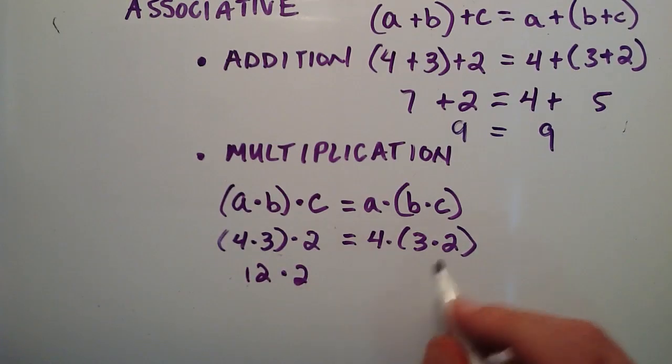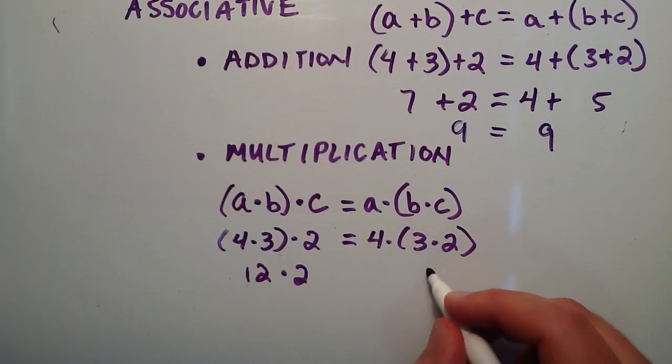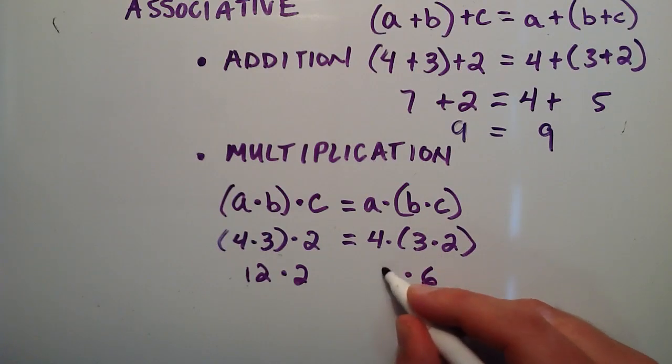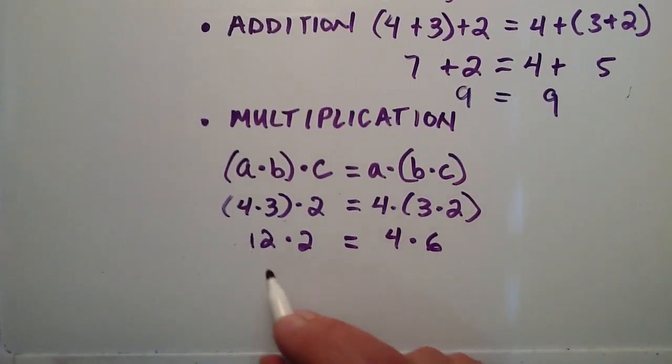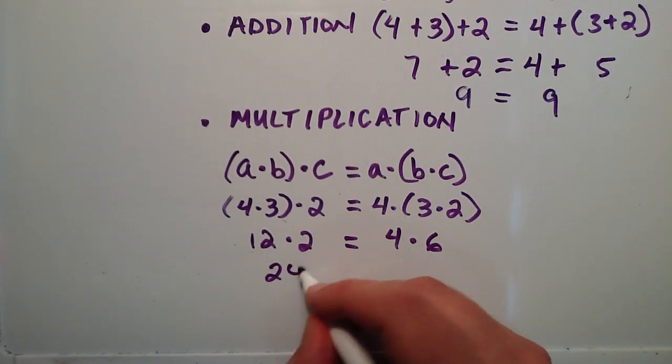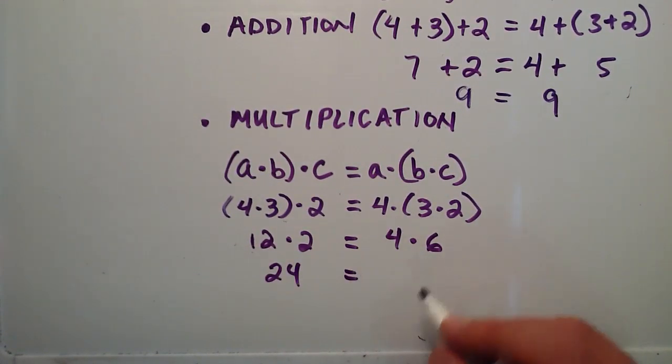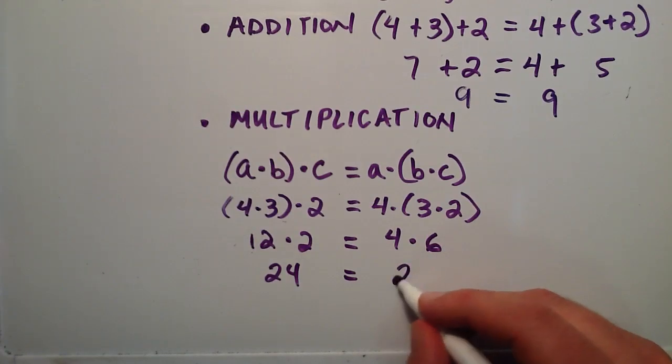On this side we do what's in the parentheses first, so 3 times 2 is 6, and we multiply that by 4. It turns out that 12 times 2 equals 24, and 4 times 6 also equals 24.